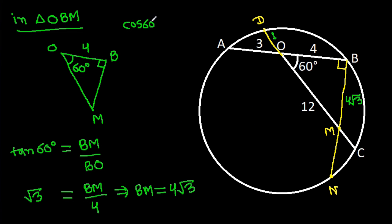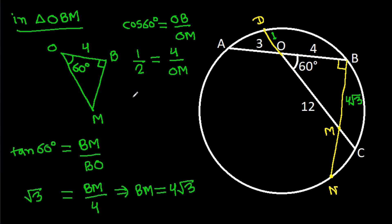Also, cos 60 degrees equals OB by OM, and cos 60 degrees is 1/2, equal to OB is 4 by OM. So OM equals 4 times 2, that will be 8.